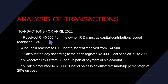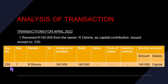Let's analyze the transactions for April 2022. On the 1st of April, we received R140,000 from the owner, Deem, as a capital contribution, and issued receipt number 208. So our document number is 230 — because we issued receipt number 230. On which day? The 1st of April. Whom did we get R140,000 from? From the owner — Deem. How much did we get as the analysis of receipt? We got R140,000.